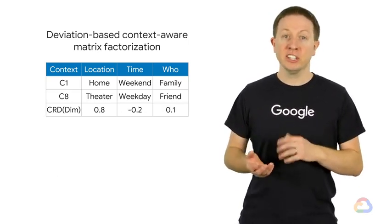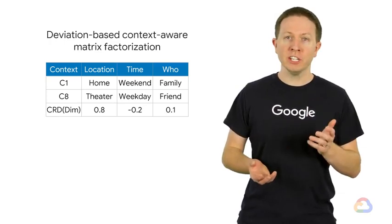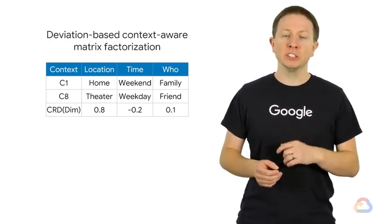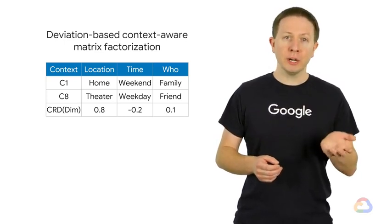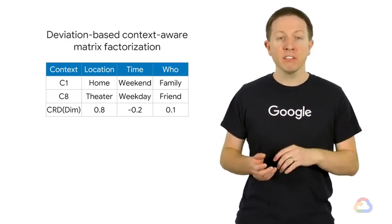Let's only look at two contexts to keep things simpler. We can calculate the contextual rating deviation, or CRD, for each of these context dimensions. The CRD for location is 0.8, which means that users' ratings in the location dimension are generally 0.8 higher for theater than home.